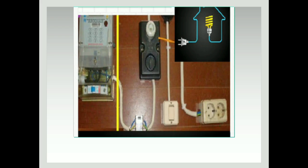Yang pertama adalah KWH atau istilahnya disebut APP, alat pembatas pemutus. Juga ada MCB, satu fase, juga ada kabel, juga ada sekering, juga ada saklar tunggal, juga ada stop kontak, juga ada tusuk kontak, dan lampu.